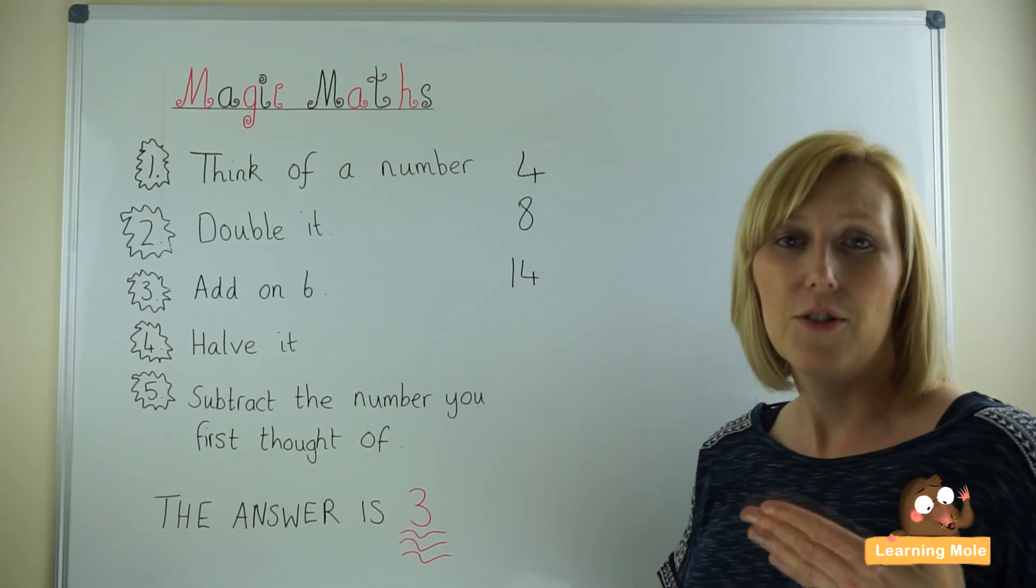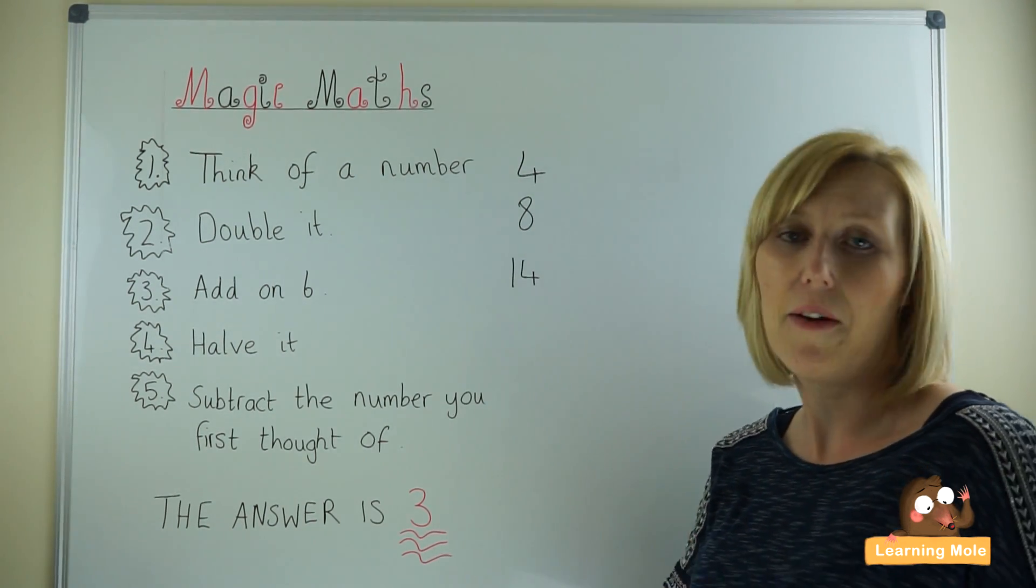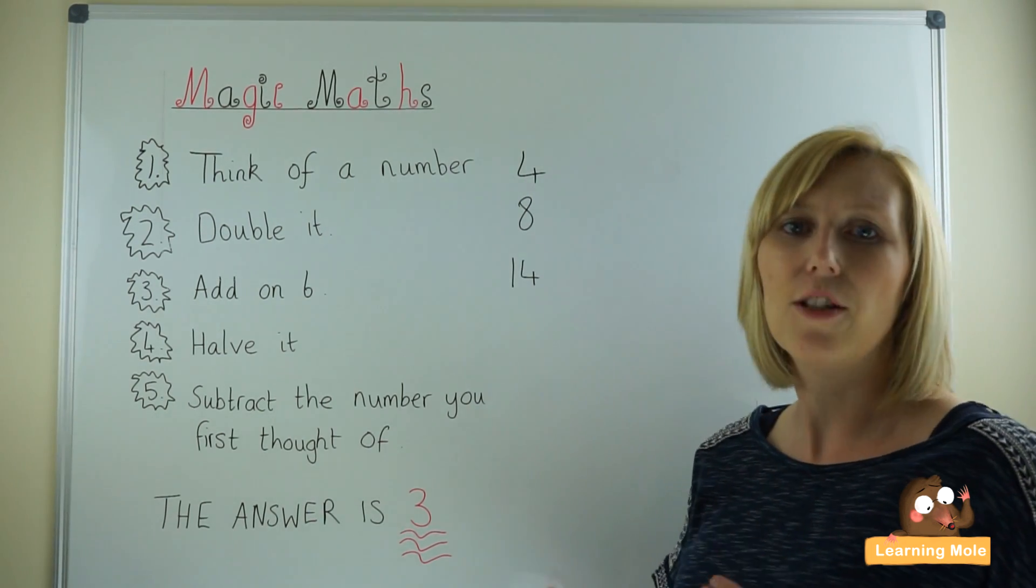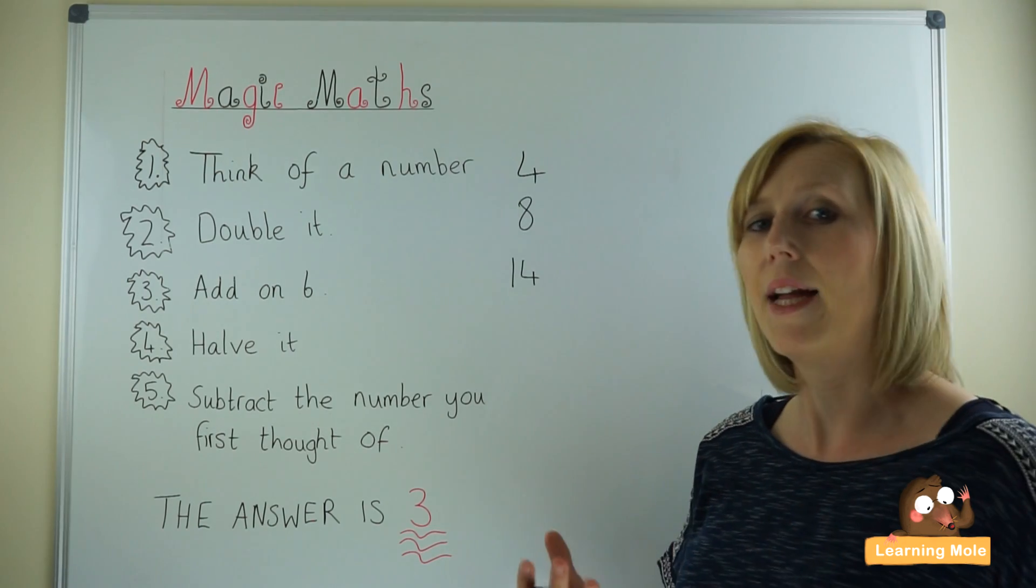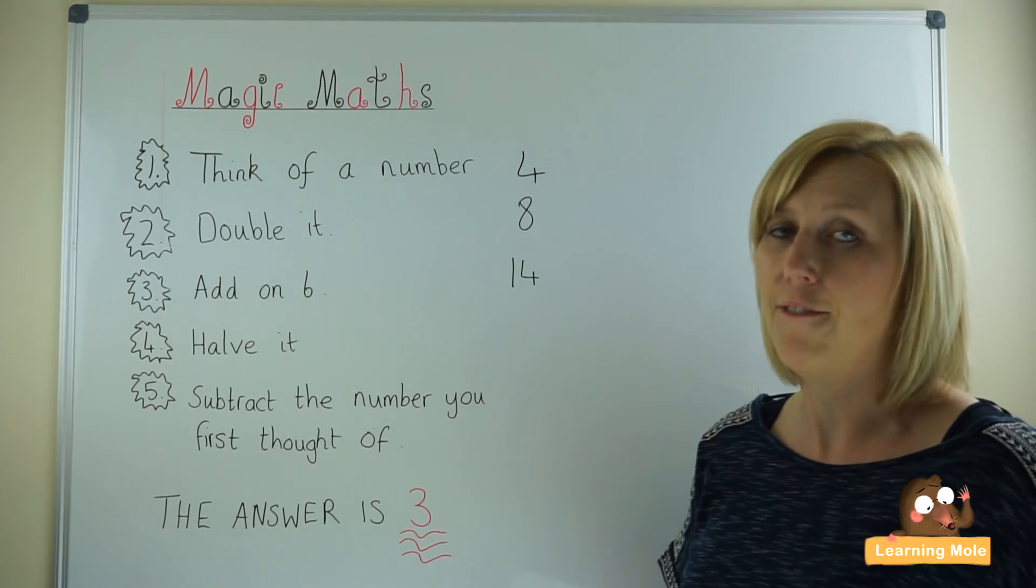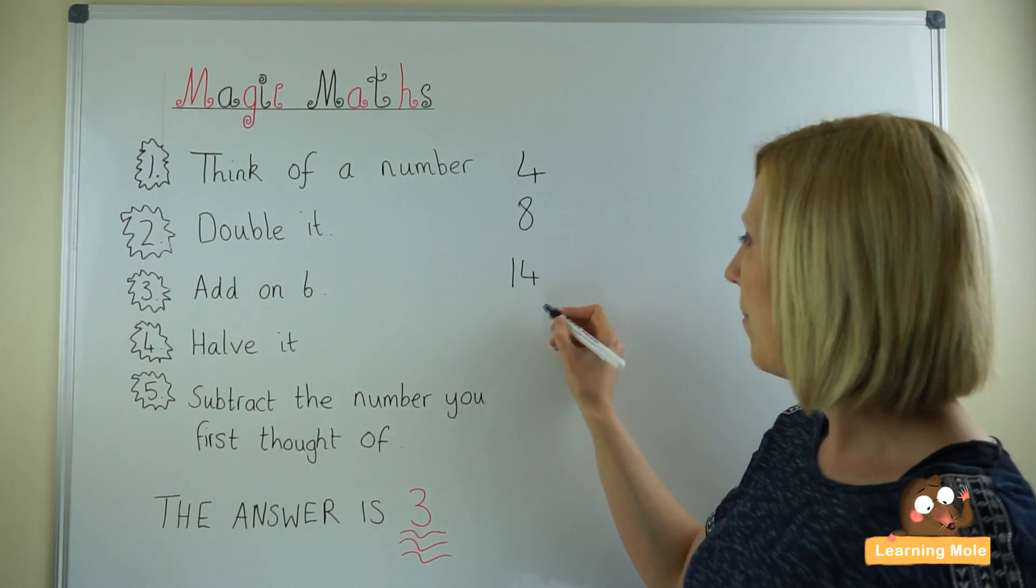Then you're going to ask your child to halve it. Split it in two. Share it between two. Again try to use all that vocabulary to really encourage your child with their understanding of mathematical concepts and vocabulary. So halve it and we get 7.